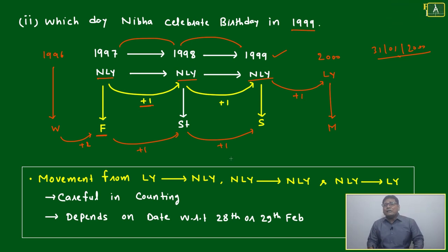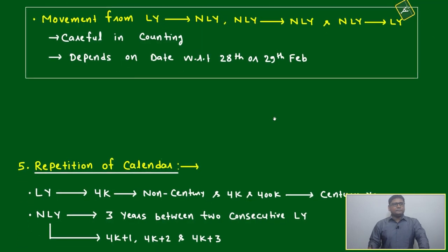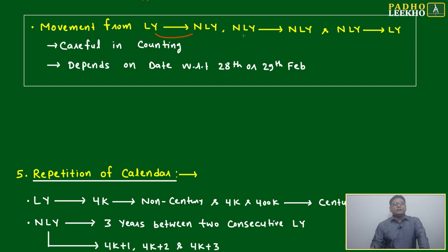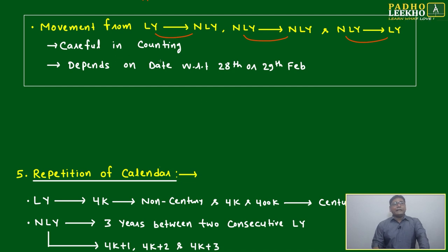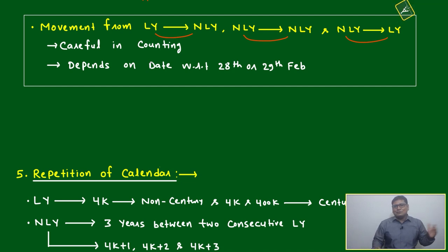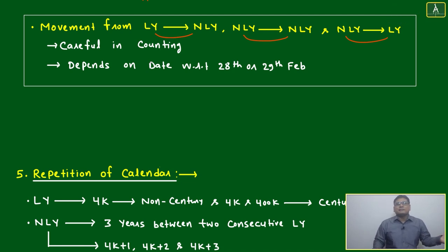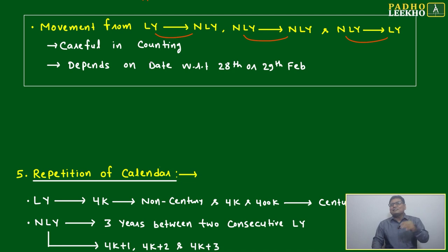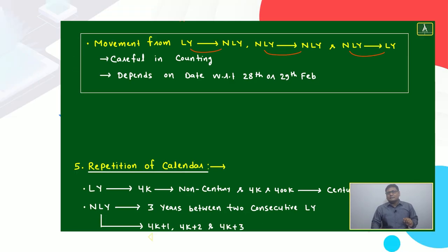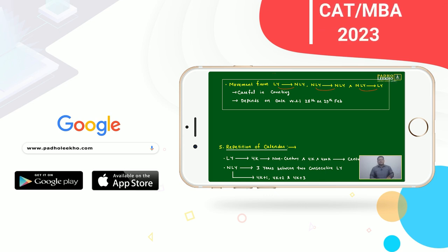Be careful during exams: movement from leap year to non-leap year, non-leap to non-leap, and non-leap to leap year all depend on whether the date is before or after February. A ±1 mistake is very easy to make. You might calculate Friday but the correct answer is Thursday or Saturday — and all three options will be given in the exam. Always carefully count with respect to February 28th or 29th when moving between year types.